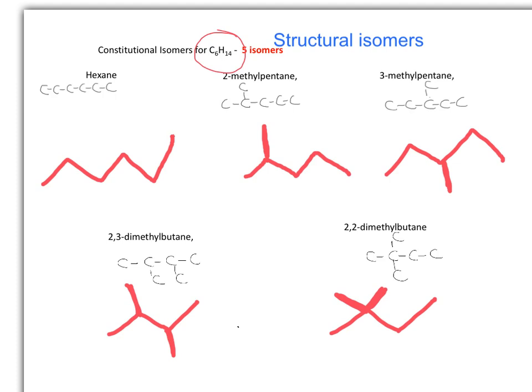But in this case, we have the first one that is hexane and it shows two carbons that have methyl groups. In this case, we have three methyl groups: one, two, and three. And this one has one, two, and three, but in different positions. So they are all constitutional isomers.